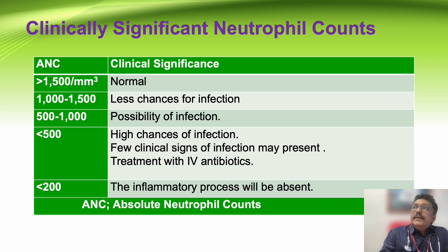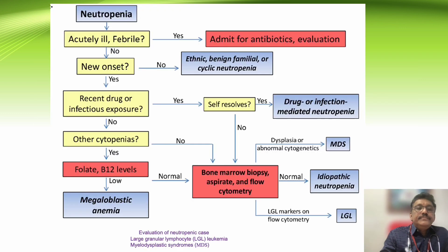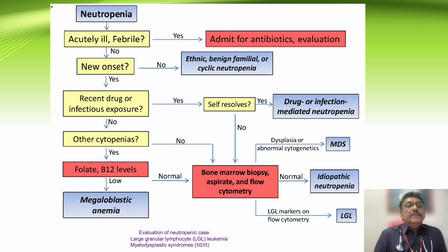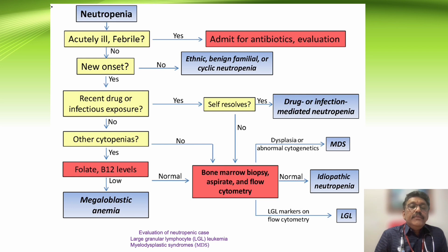Inflammatory response is nil in these patients, so they may be clinically stable. When the patient comes with infection, they may not have fever or appear toxic, but on evaluation you may find features of sepsis. When we receive a neutropenic patient in the emergency room, we check whether the patient is ill or febrile — if so, we start antibiotics directly.